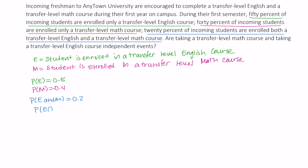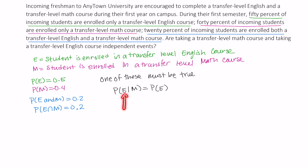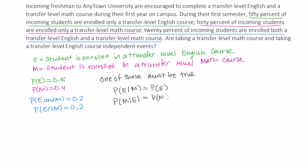We can also write this as the probability of E intersect M. Now, how can we show that these are independent or not? Well, in order for these events to be independent, one of the following must be true: the probability of E given M is equal to the probability of E — that is, the probability that a randomly selected student is taking a transfer level English course, given that the selected student is taking a transfer level math course, is equal to the probability that a student is taking a transfer level English course. Similarly, we can show independence by showing other equivalent conditions.